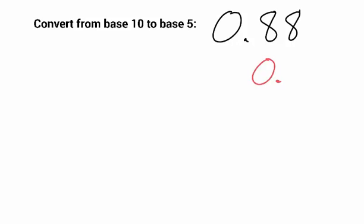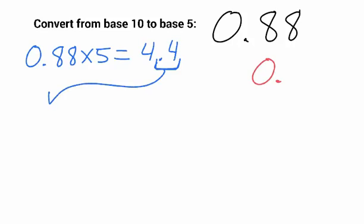And then what we do is we take that 0.88 and we multiply it by whatever base we want to change it to. So times 5, and that is equal to 4.4. Then what I'm going to do is I'm going to look at everything after the decimal and grab just that part and put the 0.4 down there. Everything after the decimal goes on the next line.